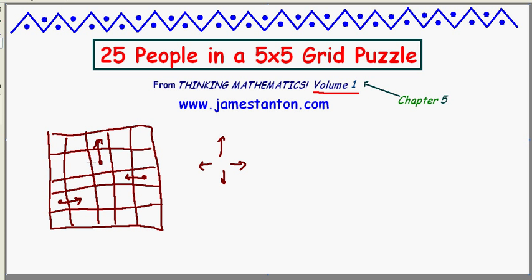And the idea is, can they simultaneously each take one step in some direction and rearrange themselves to end up again being 25 people in a grid, one person per cell?